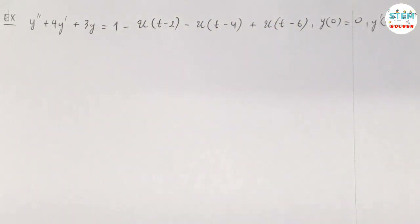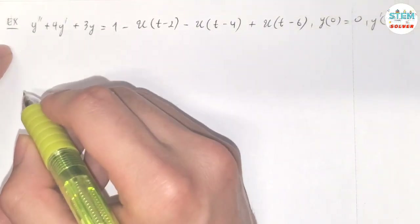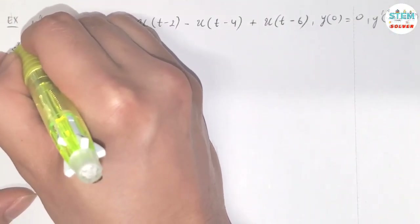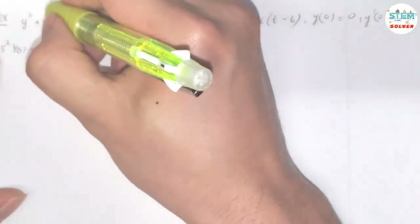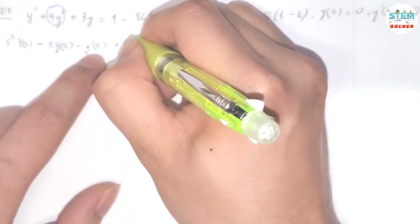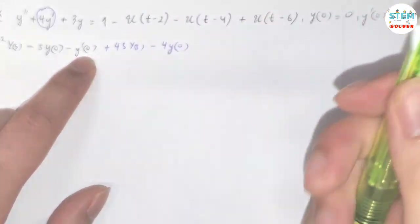Using the Laplace transform, solve the initial value problem: Y'' + 4Y' + 3Y = 1 - U(T-2) - U(T-4) + U(T-6), with Y(0) = 0 and Y'(0) = 0. First, I'm going to use the derivative theorem. So I have S² · Y(S) - S·Y(0) - Y'(0) for the first term, and 4S·Y(S) - 4·Y(0) for the second term.